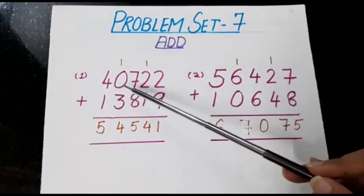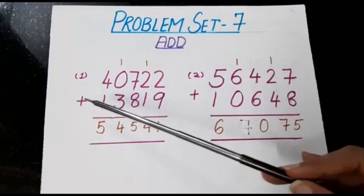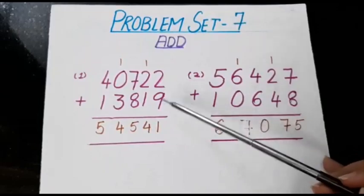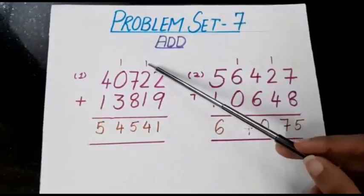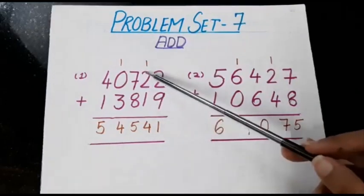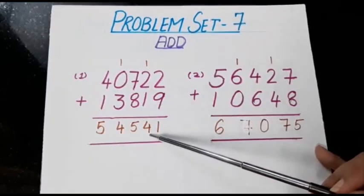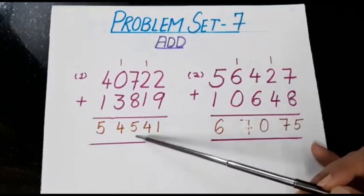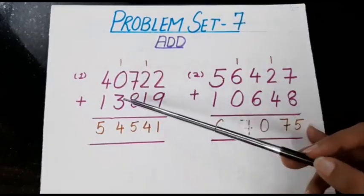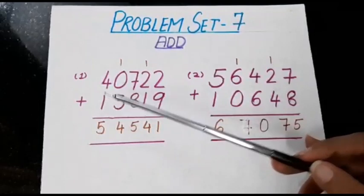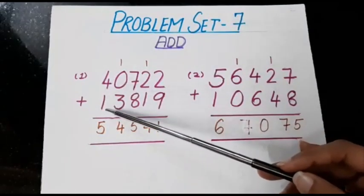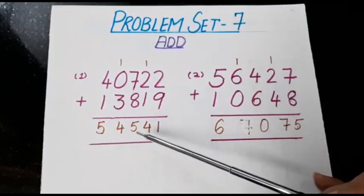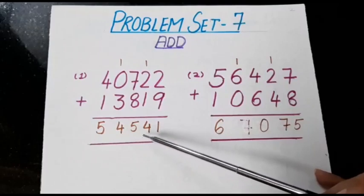First sum: 40,722 plus 13,819. Start from the last digit. 9 plus 2 is 11, so we write 1 and carry 1. 1 plus 2 plus 1 is 4. 7 plus 8 is 15, so we write 5 and carry 1. Then 3 plus 1 is 4, no carry needed. Then 4 plus 1 is 5. So our answer is 54,541.